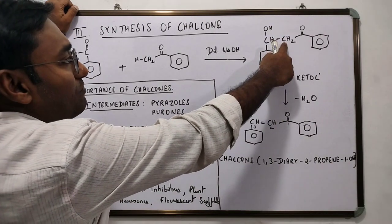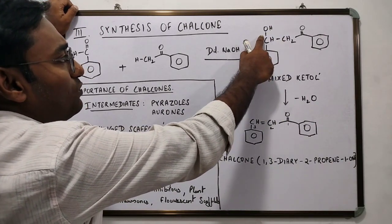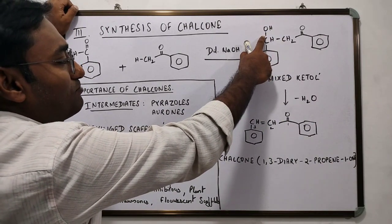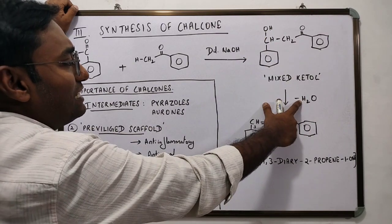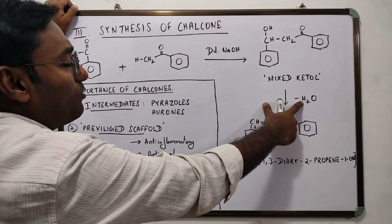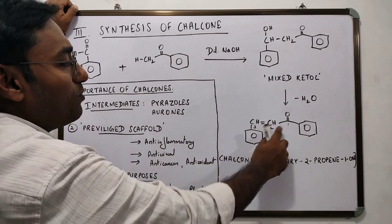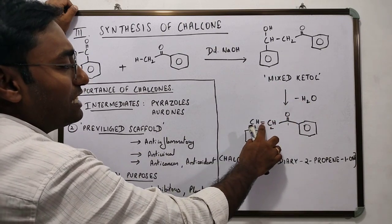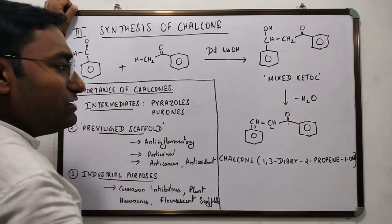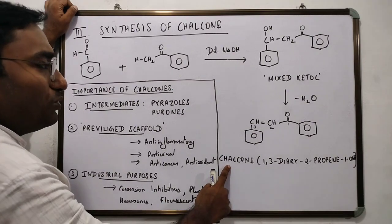It loses an H from the alpha hydrogen atom and an OH from the beta hydrogen atom, resulting in the elimination of water molecule to form alpha-beta unsaturated ketone, which in this case is a chalcone.